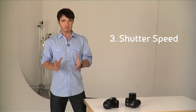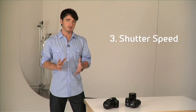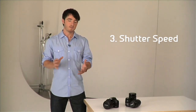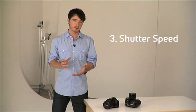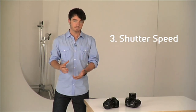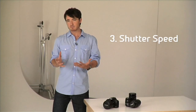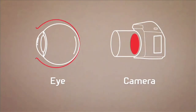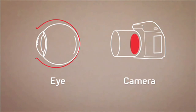Now onto shutter speed. Shutter speed is measured in fractions of a second, and it's the amount of time that the shutter is open for each time you take a photograph. The larger the number, the faster the shutter speed. If we relate this back to our eye, it's similar to the eyelid. Of course, our eyes are seeing sort of constant motion, so they're always open, rather than opening and closing as it does in a still camera.